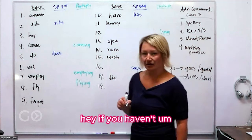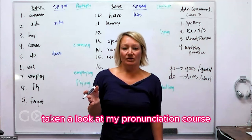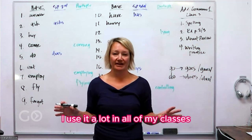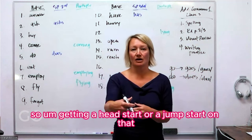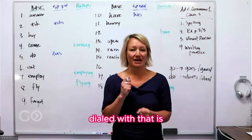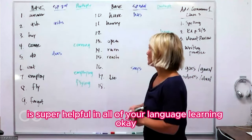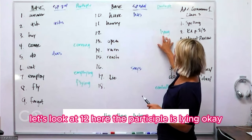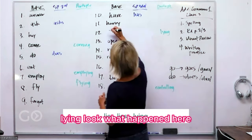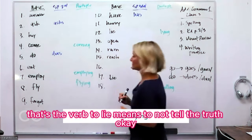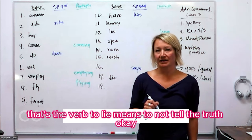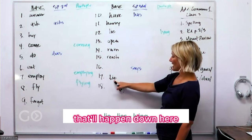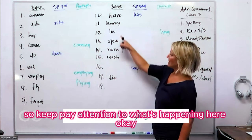If you haven't taken a look at my pronunciation course, that's a really helpful thing. When we start talking about the International Phonetic Alphabet, I use it a lot in all of my classes, so getting a jumpstart on that is super helpful for all your language learning. Now, the participle for number 12 is 'lying.' The verb is 'to lie,' meaning to not tell the truth, and it changes to L-Y-I-N-G. Pay attention to what's happening there.